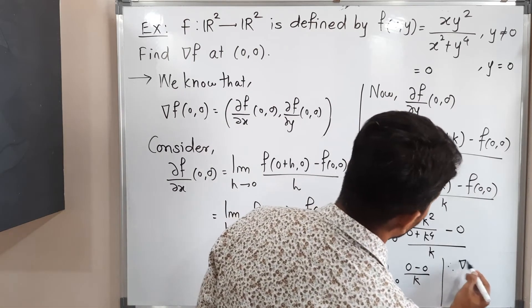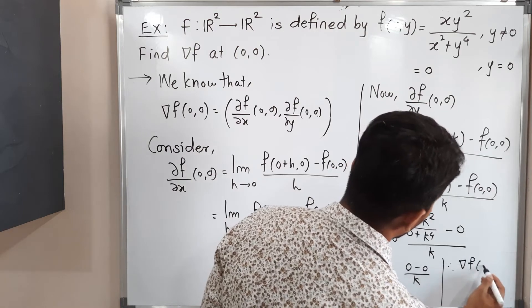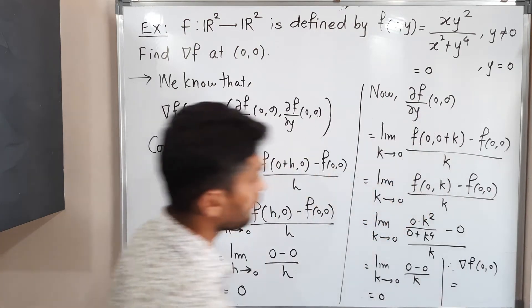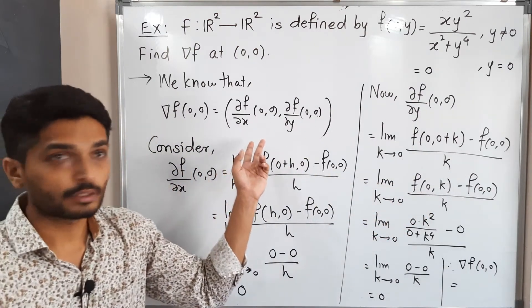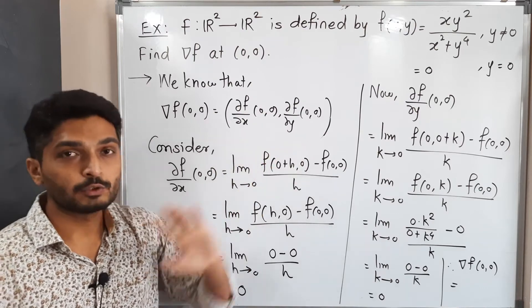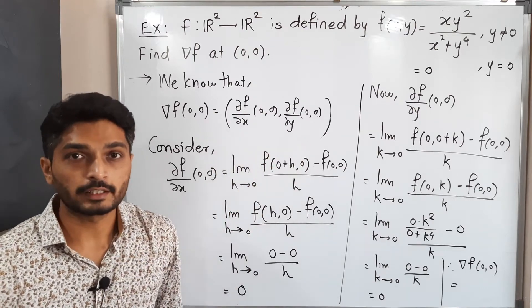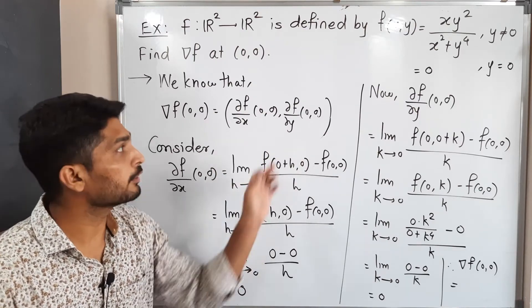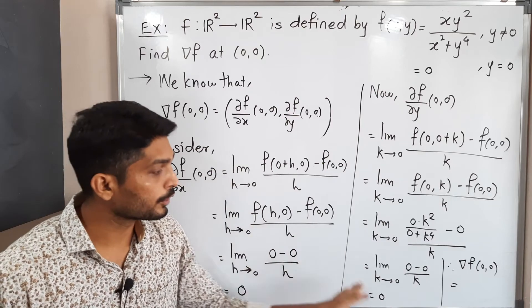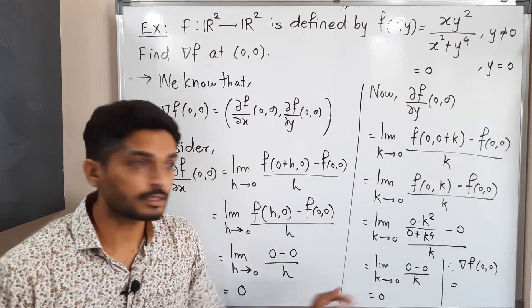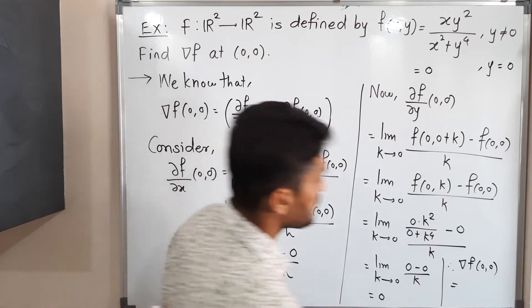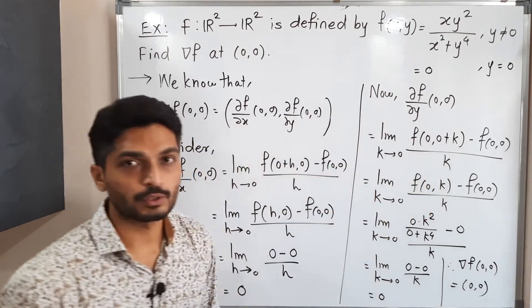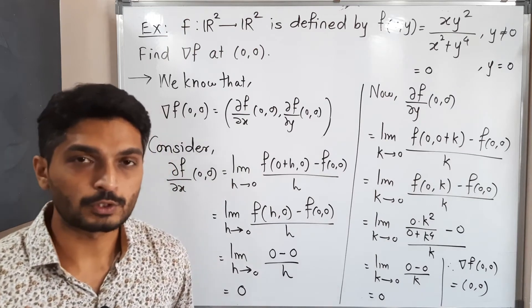Therefore, ∇f(0,0): we have calculated both components. The value of the first component is 0 and the value of the second component is also 0. So ∇f(0,0) = (0, 0).